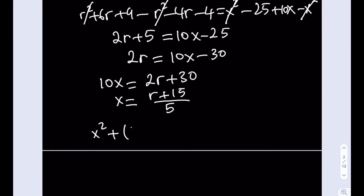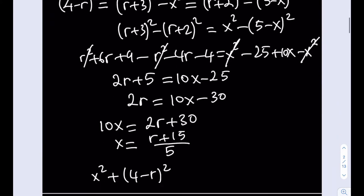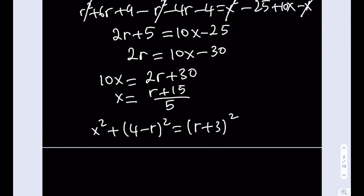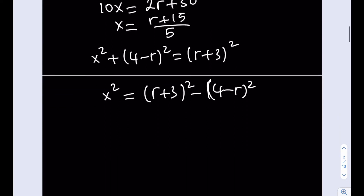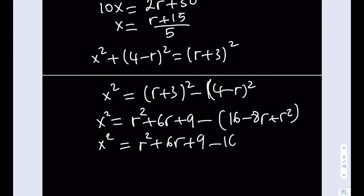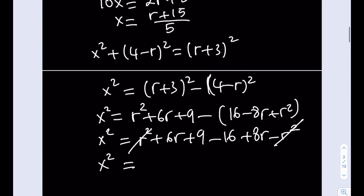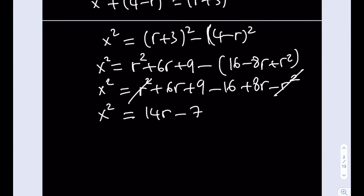Once you have that, you can just plug it into one of the equations here. The first one seems a little simpler, so let's go ahead and use that one. x squared plus 4 minus r quantity squared is equal to r plus 3 squared. So what I'm going to do is replace x with r plus 15 divided by 5, and since I can just go ahead and isolate x squared here, I'm going to do that first because that's going to simplify the process. So let's expand these two: r squared plus 6r plus 9 minus 16 minus 8r plus r squared. When you expand it, r squared is going to cancel out, which is nice. And x squared is going to equal 14r minus 7.